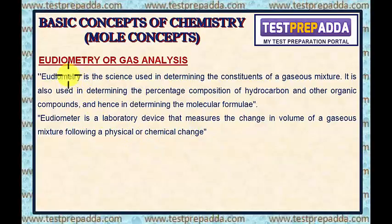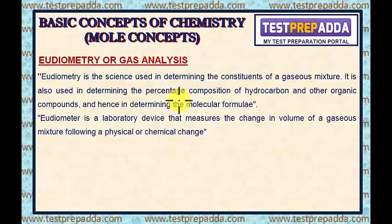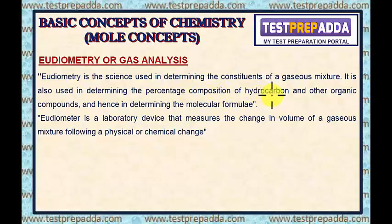Eudiometry is used in determining the constituents of the gaseous mixture as well as in knowing the formula or the percentage composition of the compound — mainly hydrocarbon and some other organic compounds.